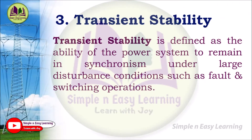The third analysis is transient stability. Transient stability is defined as the ability of the power system to remain in synchronism under large disturbance conditions such as faults or switching operations. When a sudden fault occurs, there will be oscillations and voltage fluctuations in the system — this is called a disturbance. In some cases, switching operations such as sudden inclusion or removal of load will also lead to a disturbance to the overall system, and the stability gets disturbed.